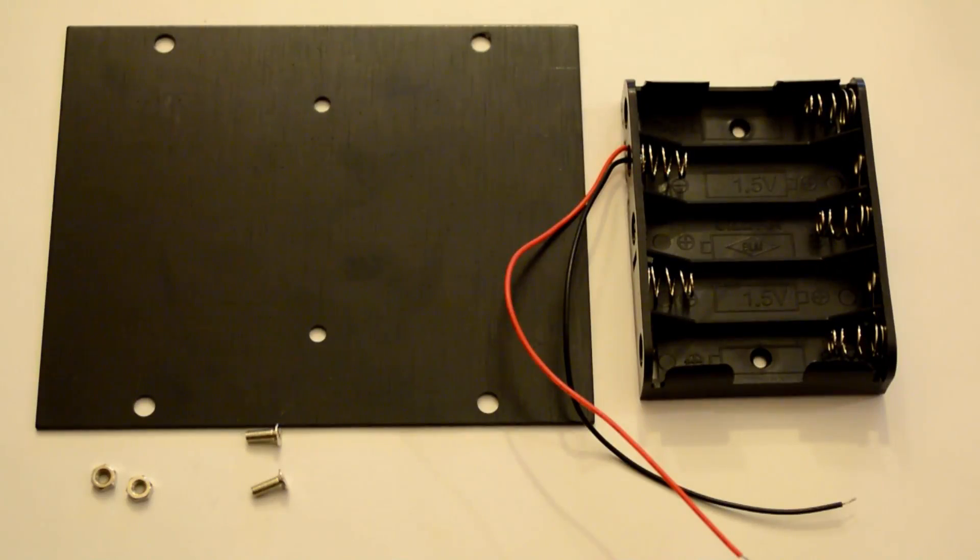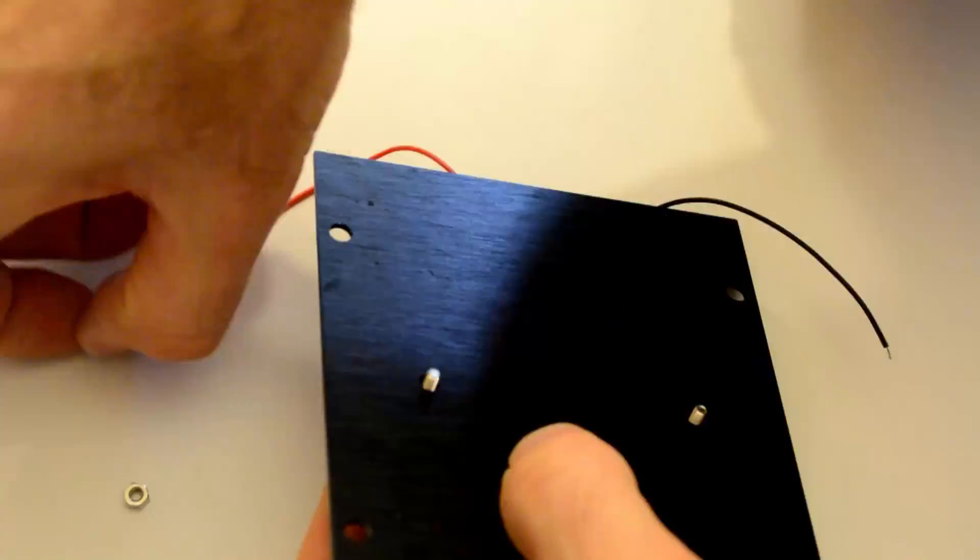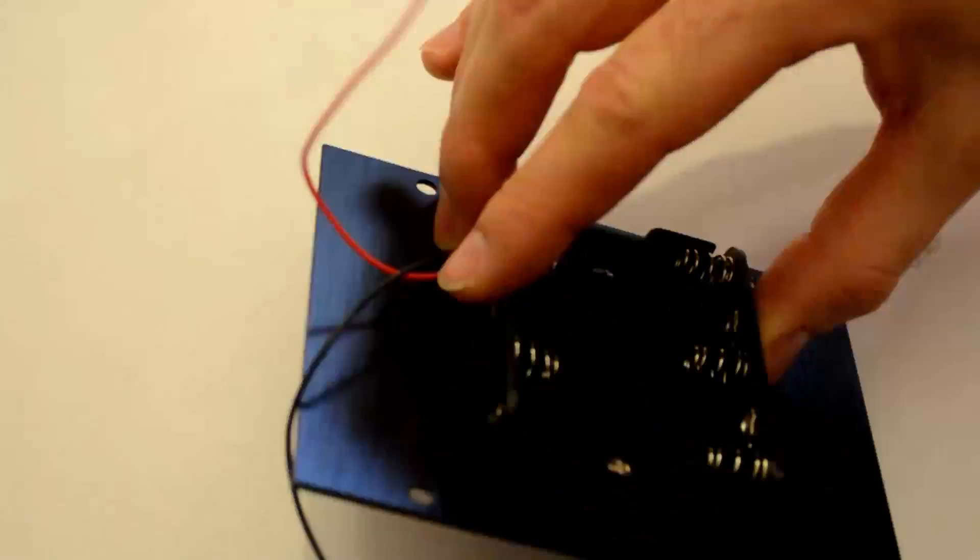The next thing we assemble is the battery holder assembly. This is where you will need the two flathead screws. So hold off on putting the batteries in, since we still have to do some soldering.